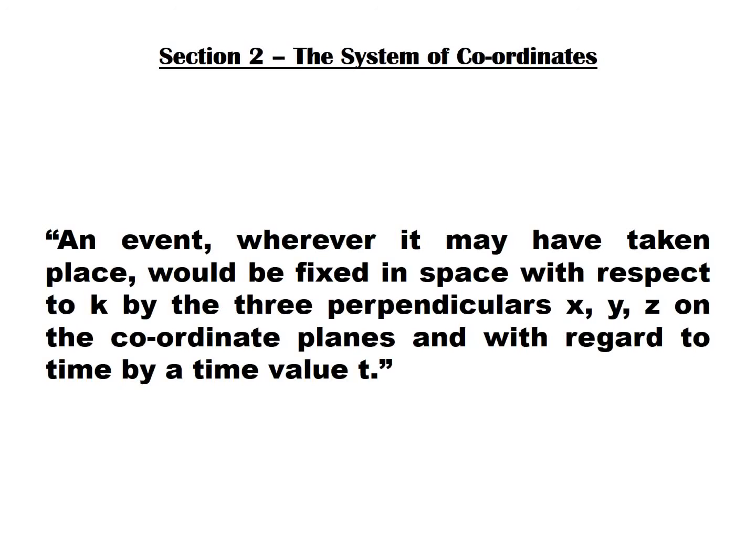He goes further and reminds us that to identify any event, not only must we identify the three axes, there is another necessary parameter: time. An event, wherever it may have taken place, would be fixed in space with respect to k by the three perpendiculars x, y, z on the coordinate planes, and with regard to time, by a time value t. So to identify an event, we say where it took place and the time it took place.